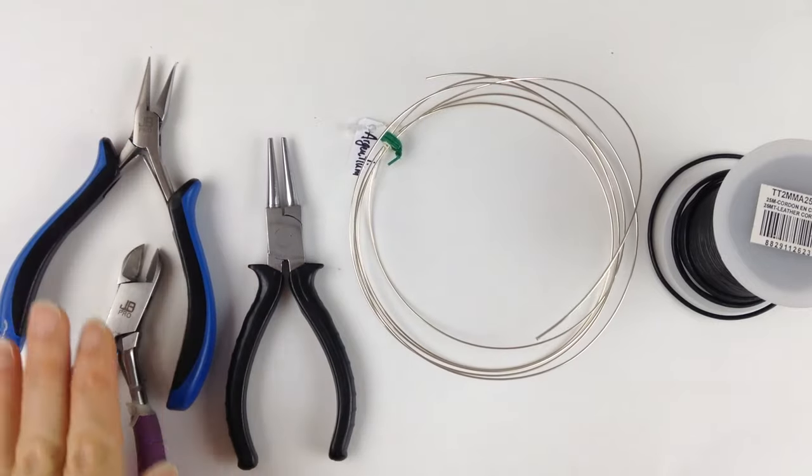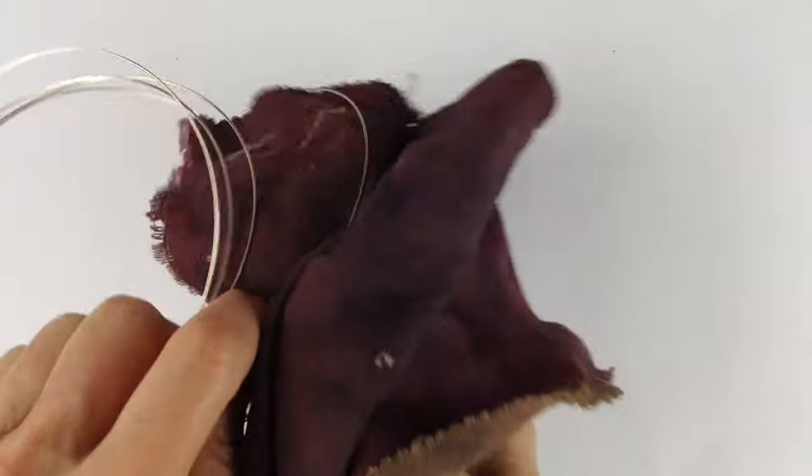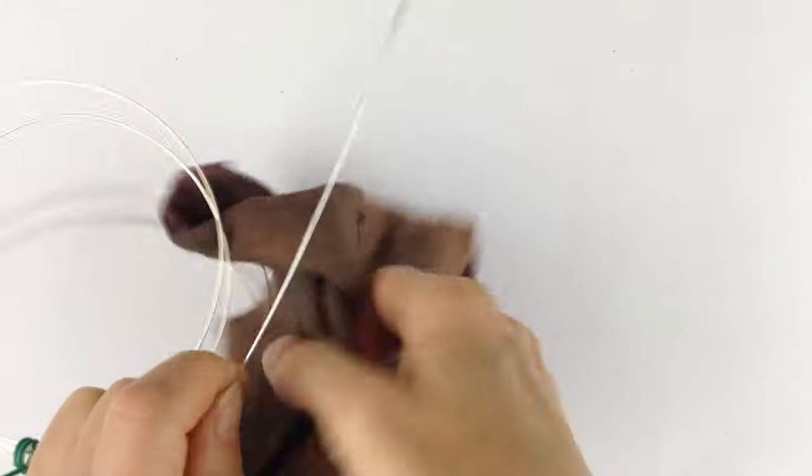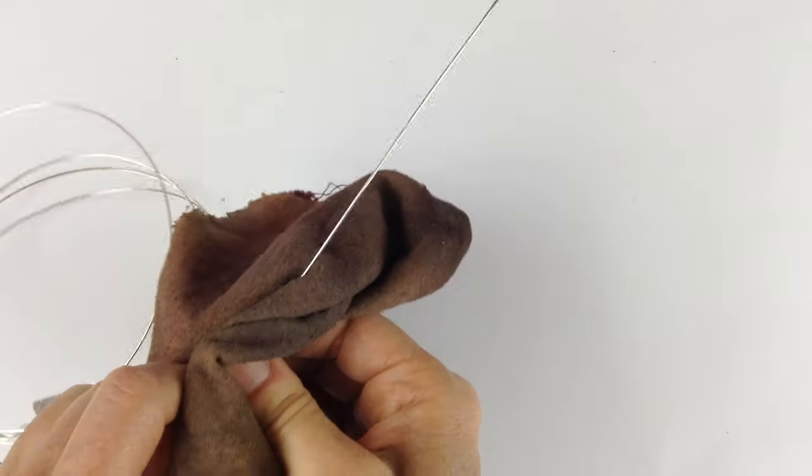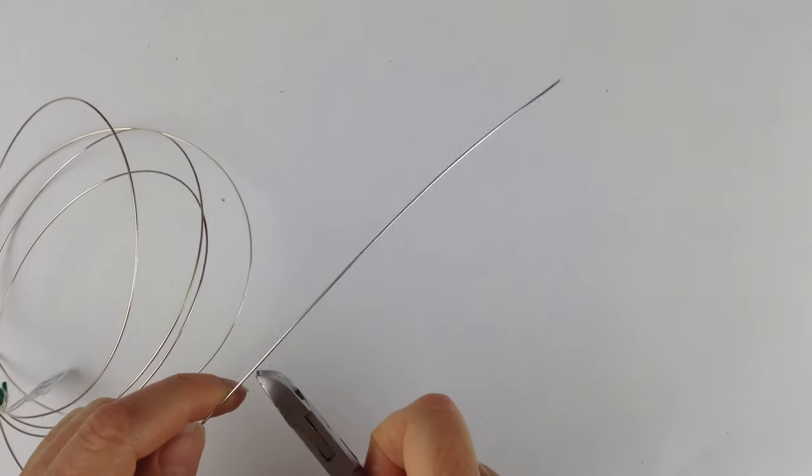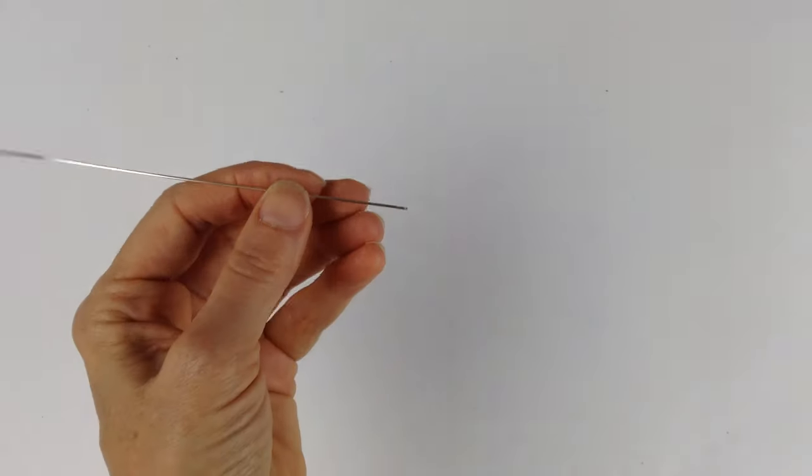So what you're going to do first is actually clean the wire. I have this silver cleaning cloth. You wipe it with the red side to clean it with the chemicals, and then you flip it and wipe it with the yellow side. I'll put a link below where you can purchase this cloth. And after that, we're going to cut a piece that's about six inches long.